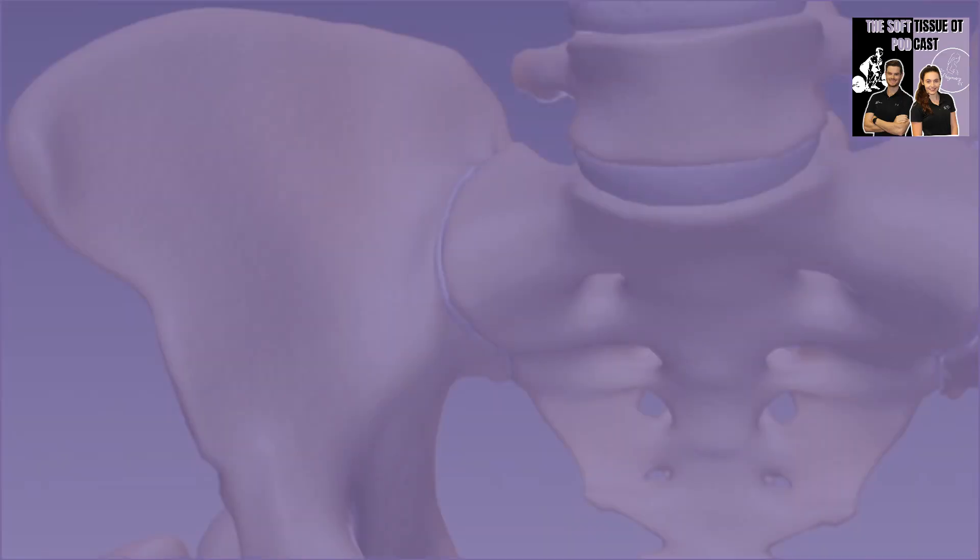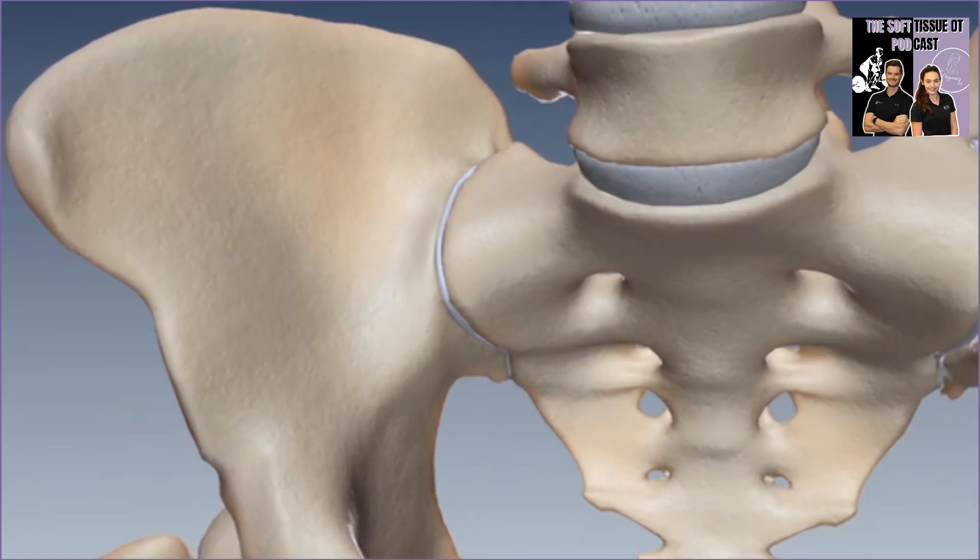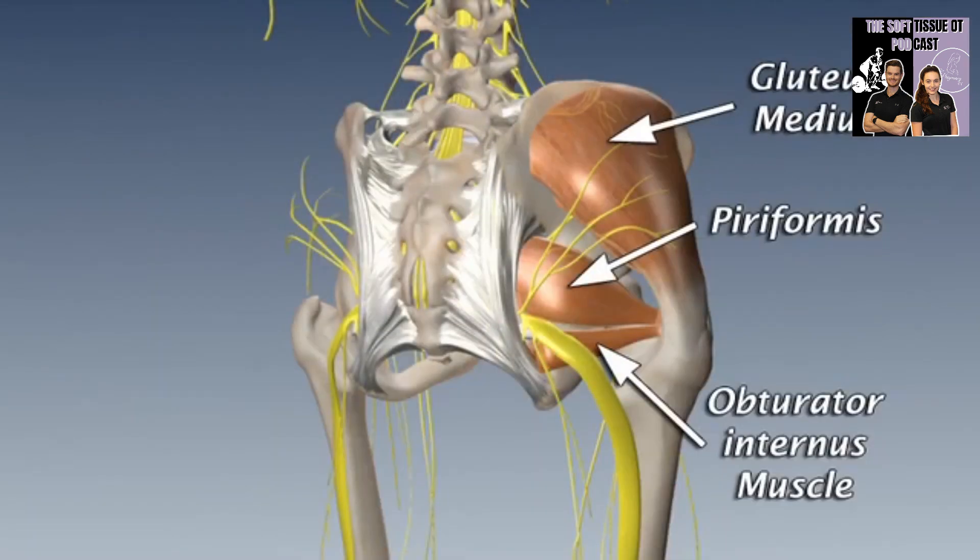The SIJ is surrounded by major muscle groups including the glutes, lats, and core stabilizer muscles. Unlike other synovial joints, it has very limited mobility — only a few degrees of movement — which is essential because its primary role is force absorption and stability. The SIJ is very dependent on muscular support, meaning that instability or weakness in surrounding muscles can lead to excessive movement and therefore pain.